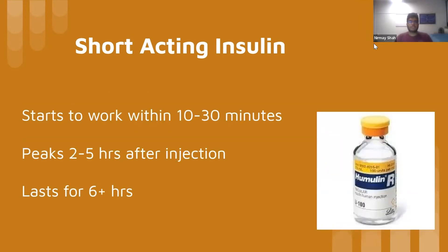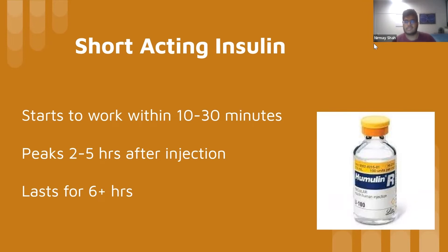In comparison, short-acting insulin is similar to rapid insulin, but this one starts to work within 10 to 30 minutes — a slightly longer onset time. It peaks within two to five hours after injection, again depending on the specific type. The one shown here is a Humulin R, and this type of insulin usually lasts just over six hours, depending on the specific model of short-acting insulin.